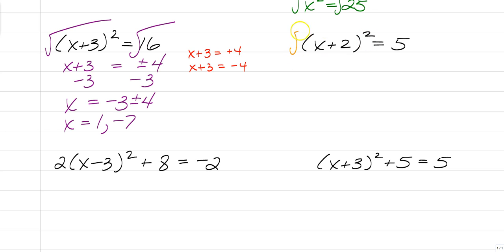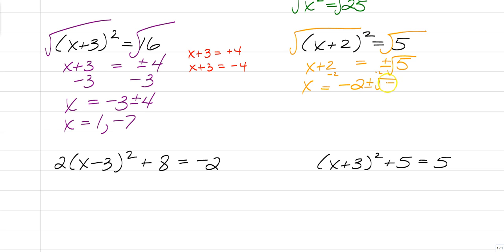Same thing here. We already have the parentheses squared by themselves, so let's get rid of the squared. That leaves us with x plus 2 is equal to plus or minus square root of 5. If you want to split it, you can say x plus 2 equals square root of 5, or x plus 2 equals negative square root of 5. Remember, the square root of 5 cannot simplify. So subtracting 2 from both sides, x is equal to negative 2 plus or minus square root of 5. That's the simpler way to write your answer.